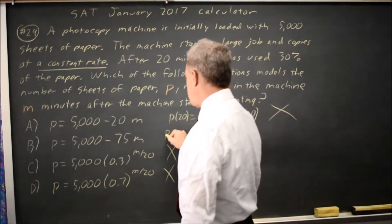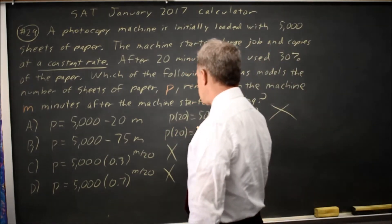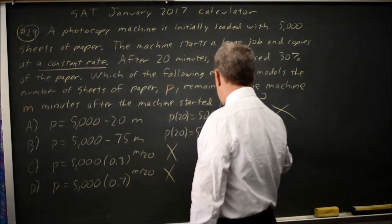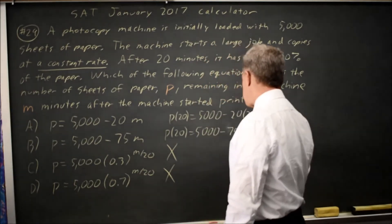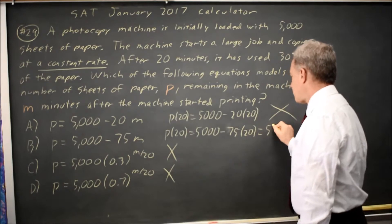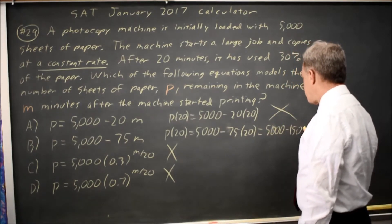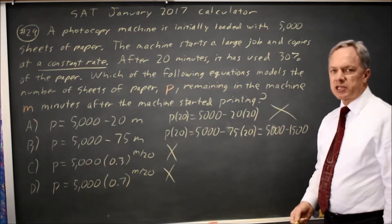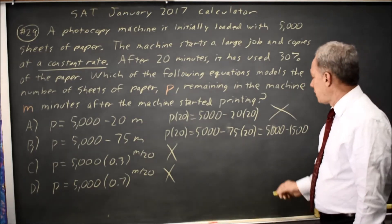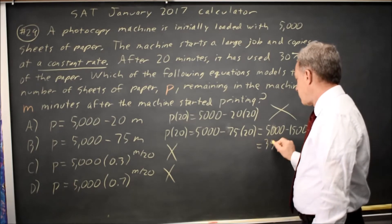Here you get P at time 20 equals 5,000 minus 75 times 20, which is 5,000 minus 1,500. You can do that on your calculator, of course, because this is a calculator question. And that is 3,500.